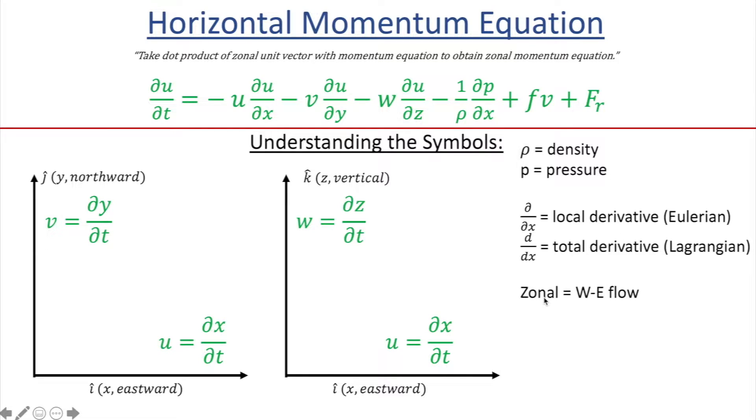So you probably heard me say the term zonal when I was talking about the eastward direction. That's pretty much what it means, west to east flow. And meridional is the north to south flow.